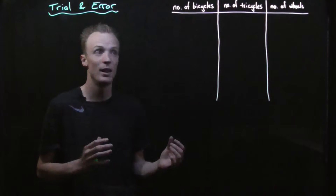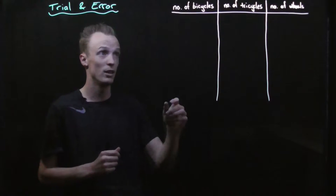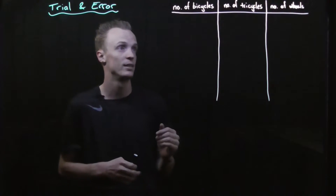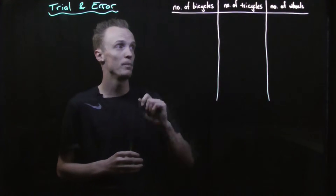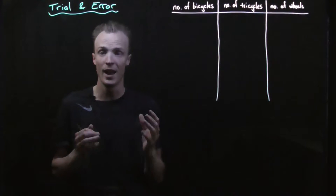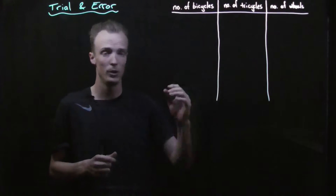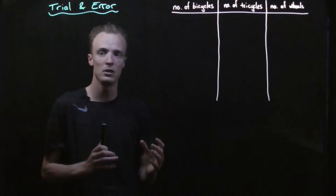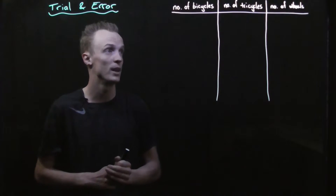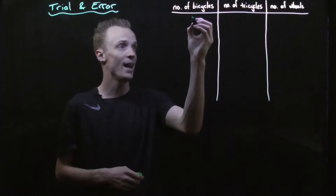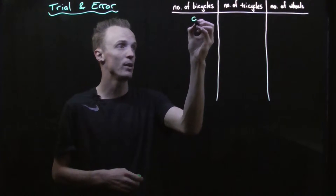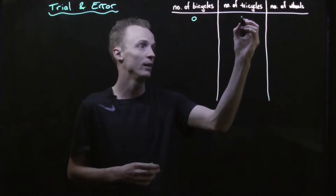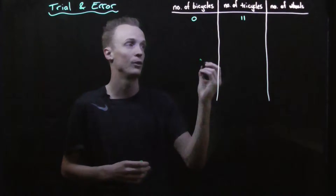To use trial and error here, I'm going to simply list out the combinations that exist: the number of bicycles, the number of tricycles, and the number of wheels for that combination. Now remember we've got 11 total cycles in our problem, so if we didn't have any bicycles it would mean that we would have to have 11 tricycles.